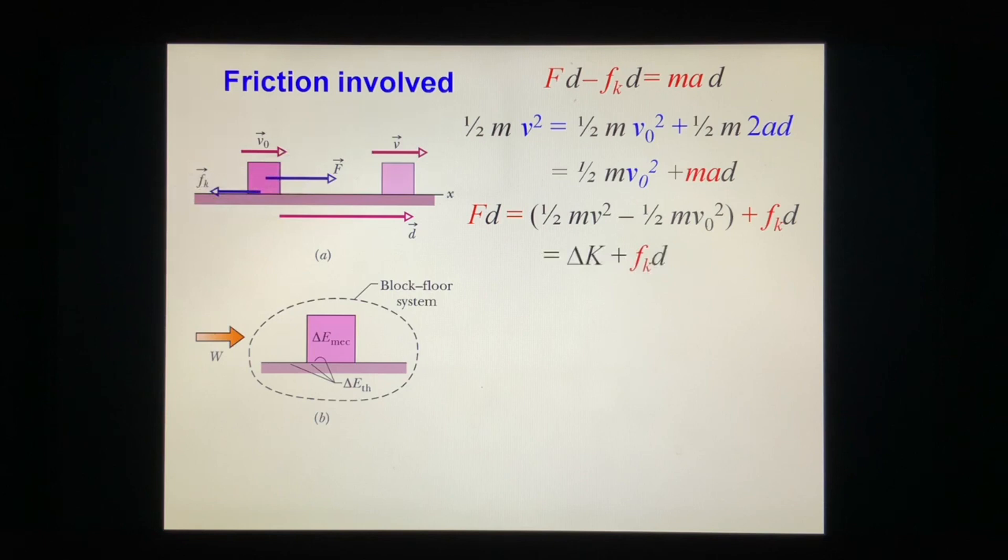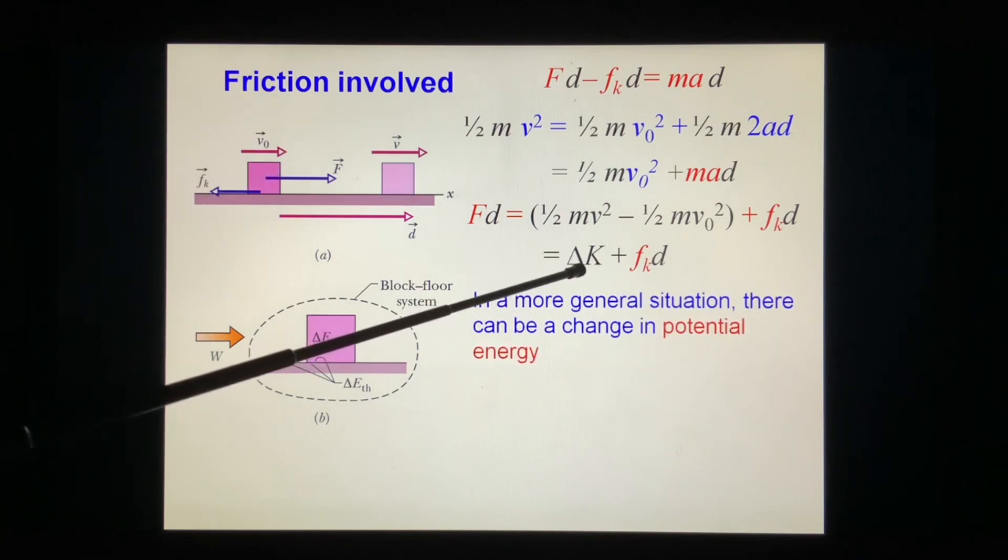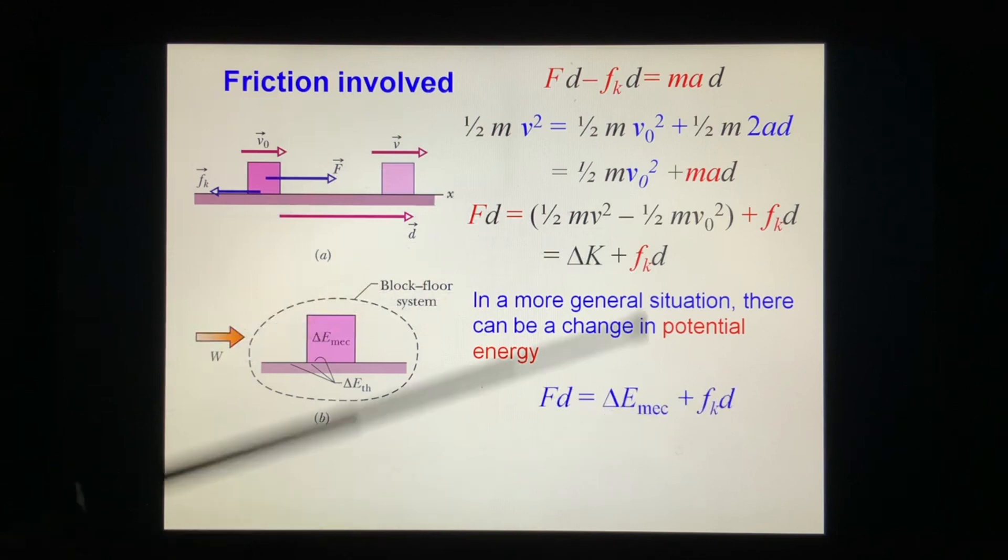In a general case, there would be a potential energy change involved. So we extend this one. We replace with ΔE_mec. We get Fd = ΔE_mec + f_k·d.